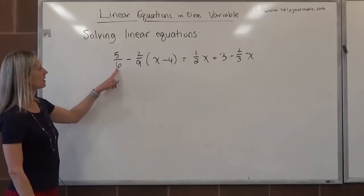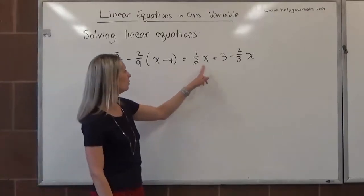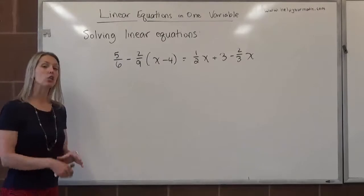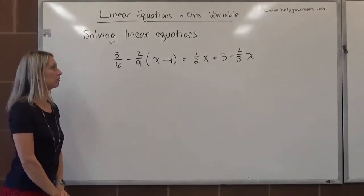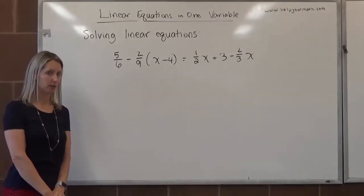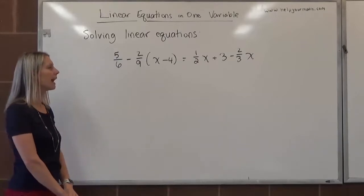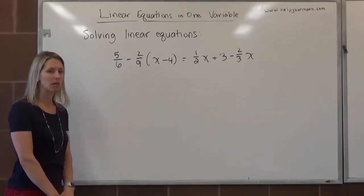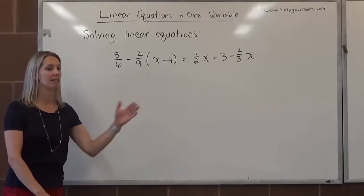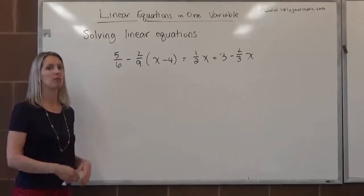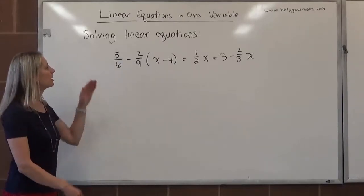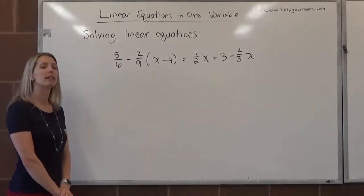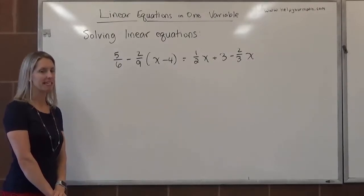Let's look at our denominators: 6, 9, 2, and 3. What do 6, 9, 2, and 3 all go into? Well, there are infinitely many correct answers, but the one that we're going to go for right now is 18. You might also be thinking, well, we could use 36. Absolutely you can use 36, but since 18 is smaller, that's generally the one that we want to go with. So we're going to take each term and rewrite them so that they all have denominators of 18.